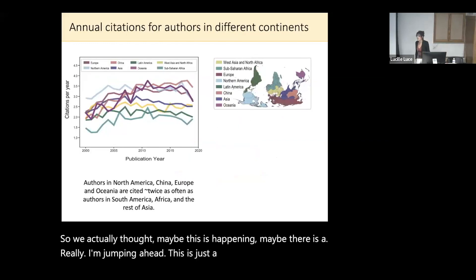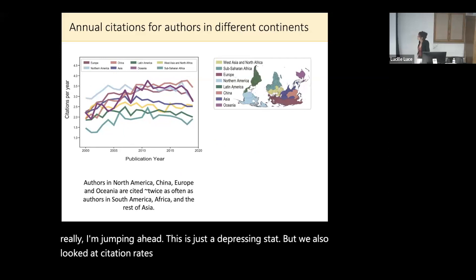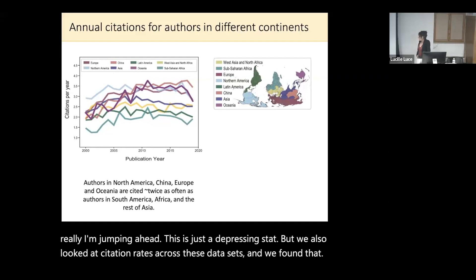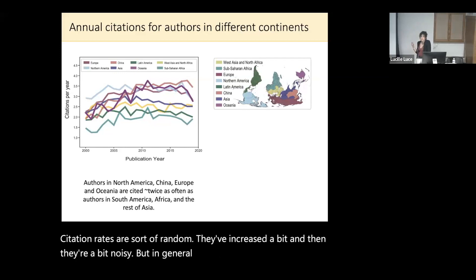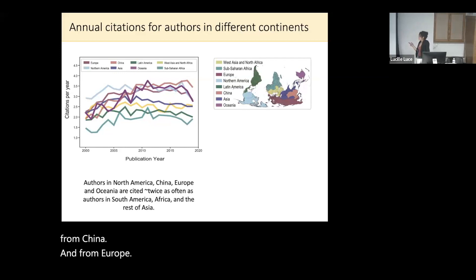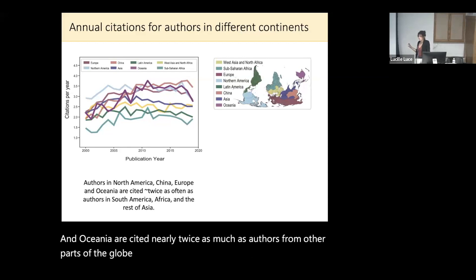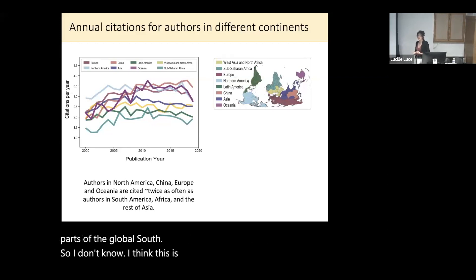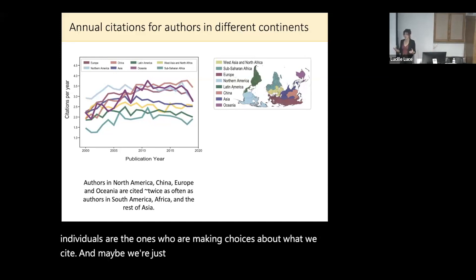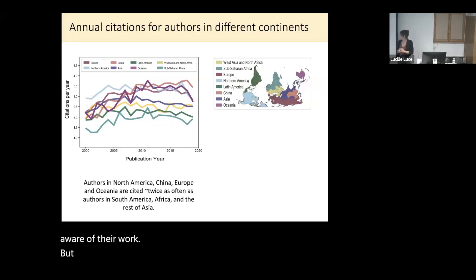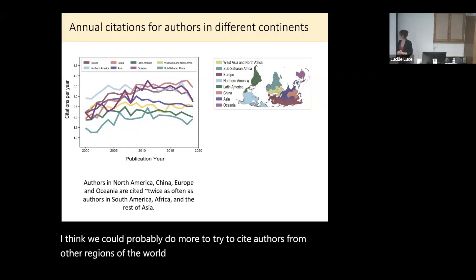We also looked at citation rates across these datasets. We found that citation rates have increased a bit and are a bit noisy, but in general, authors from North America, China, and Europe and Oceania are cited nearly twice as much as authors from other parts of the global south. I think this is kind of depressing because we as individuals are the ones making choices about what we cite — maybe we're just citing the people that we know. But I think we could probably do more to cite authors from other regions of the world as a way to amplify those voices.